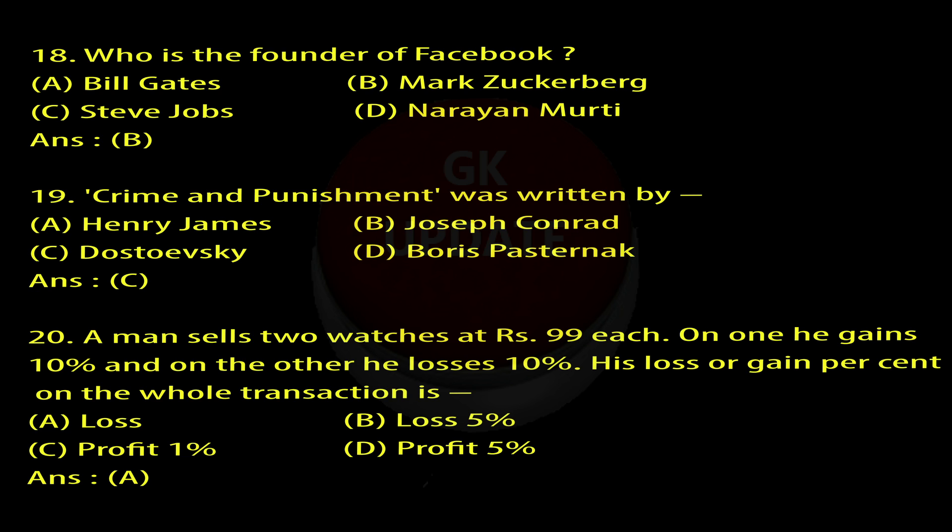Question 20: A man sells two watches at Rs. 99 each. On one he gains 10% and on the other he loses 10%. His loss or gain percent on the whole transaction is: A. Loss 1%, B. Loss 5%, C. Profit 1%, D. Profit 5%. Answer: A.